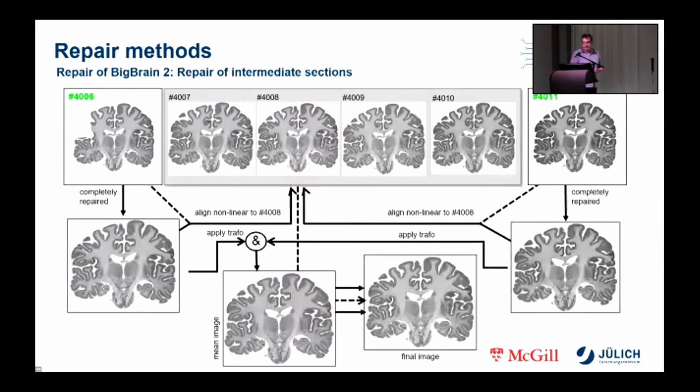For the repair of intermediate sections, an automatic method was implemented which builds on already completed repaired sections. In the example shown, the unrepaired as well as the manually repaired sections 4006 and 4011 were non-linearly transformed to the intermediate section 4008. In the same way, all intermediate sections are repaired with the help of the two nearest sections from the series of completely manually repaired sections.